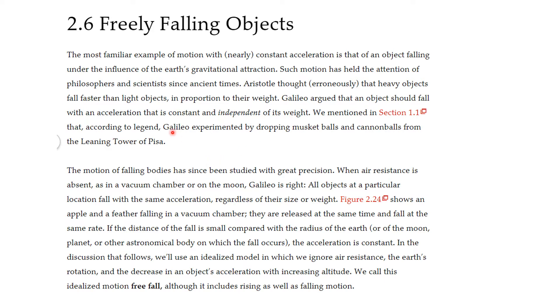Galileo argued that an object should fall with an acceleration as constant independent of weight. And it turns out that Galileo, according to legend, experimented by dropping musket balls and cannonballs from the Leaning Tower of Pisa. This has been studied with great precision. And in fact, Galileo is right. All objects of a particular location fall with the same acceleration regardless of their weight or size. And so we use this idealized model, and this is called free fall.